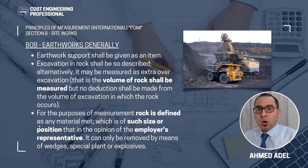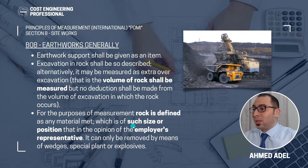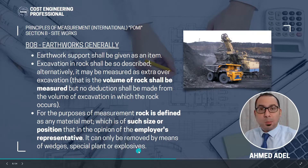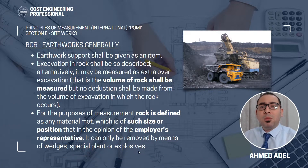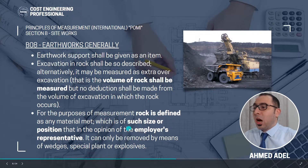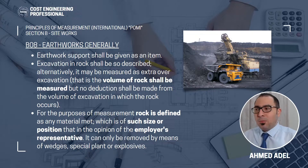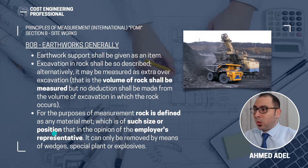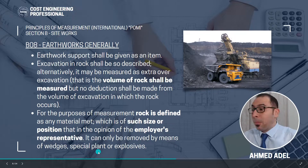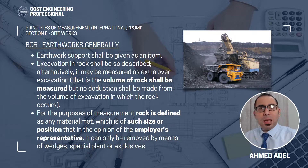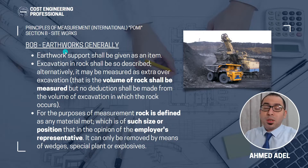What is rock? How does POMI define rock? Rock is defined as any material which is of such size or position that, in the opinion of the employer's representative, can only be removed by means of wedges, special plant, or explosives. So rock means any material that is of a big size or in a position which is very hard to excavate by normal means — it might need wedges, special construction plant, or explosives to excavate that part.